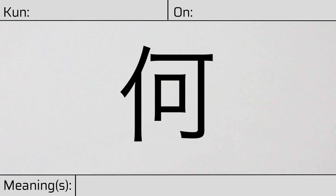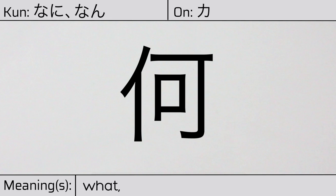Welcome to this lesson on Japanese Kanji. Today, we'll be discussing this character. This Kanji has kunyomi or Japanese readings of nani or nan. And it has onyomi or Chinese readings of ka. This character has the meanings what or how many.